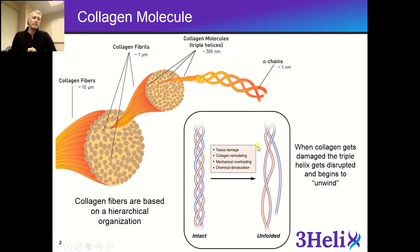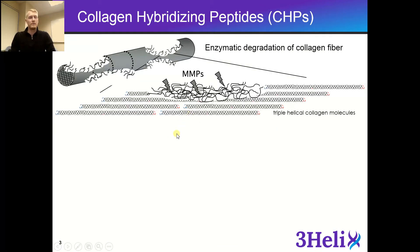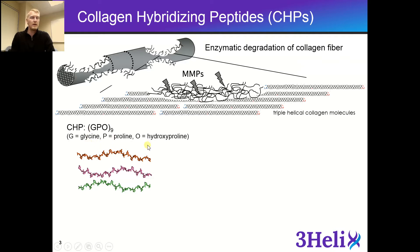You can think of this as a section of rope where you have three separate pieces of twine that come together and form a much stronger, more stable version of this rope, whereas individually they're a lot weaker. This is important because we designed our collagen hybridizing peptides to recognize that single-stranded alpha chain, or that single twine molecule. Our CHP is based off a repeating sequence that contains glycine, proline, and hydroxyproline, which is found in high contents in natural collagen, and this sequence has the highest propensity to refold into the collagen triple helix.